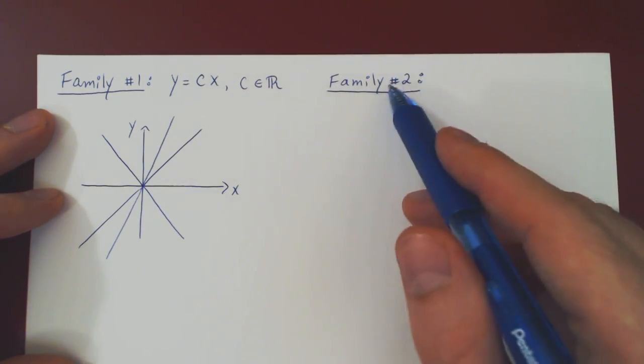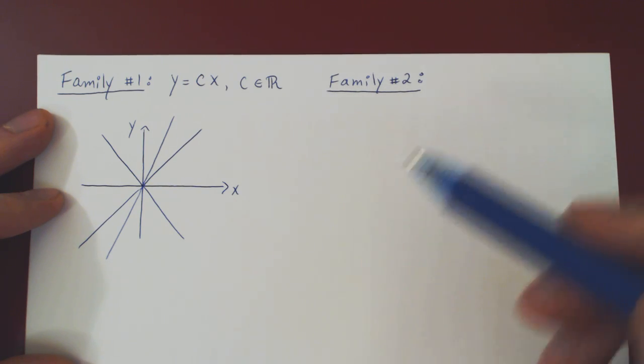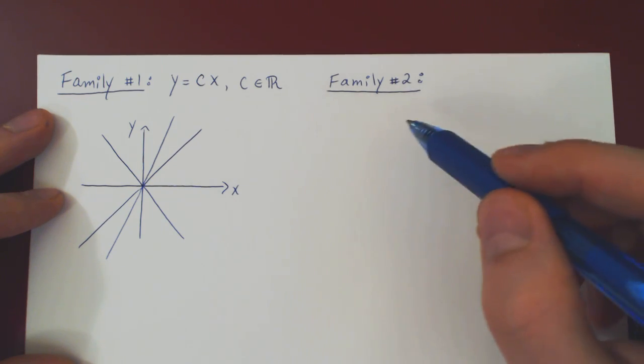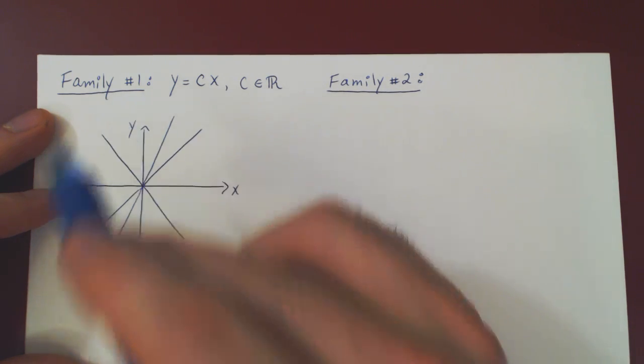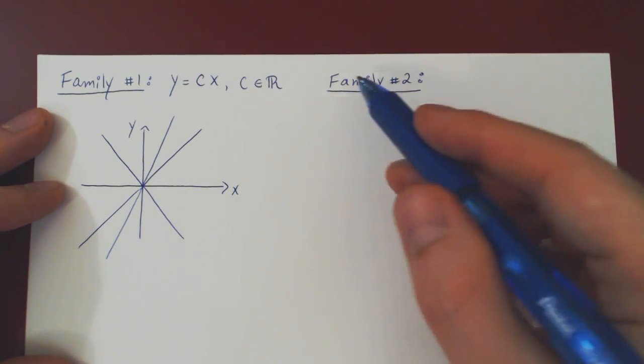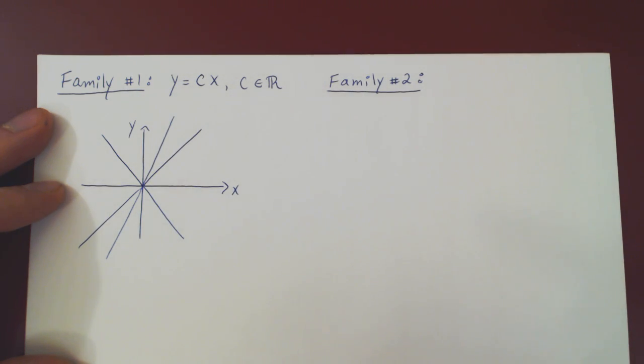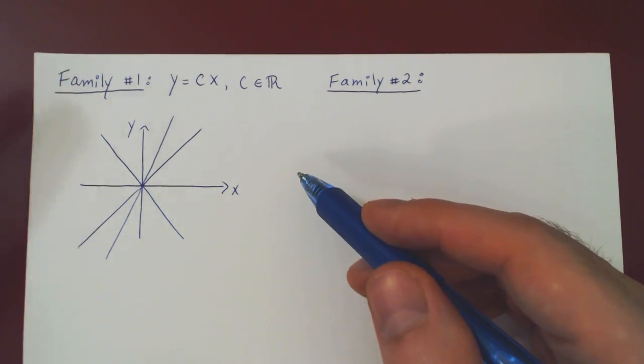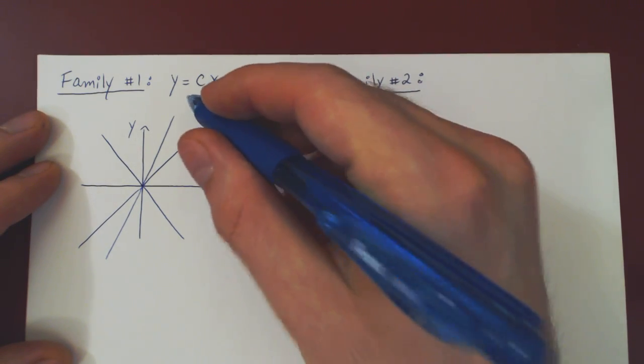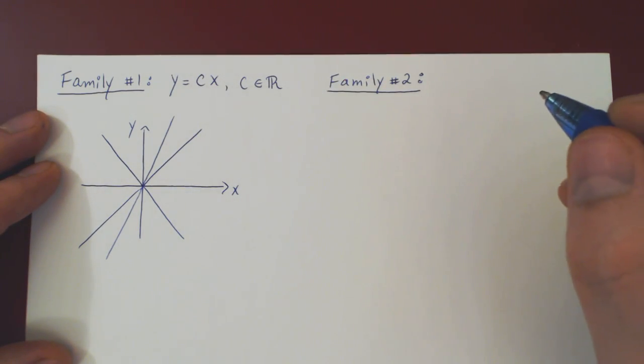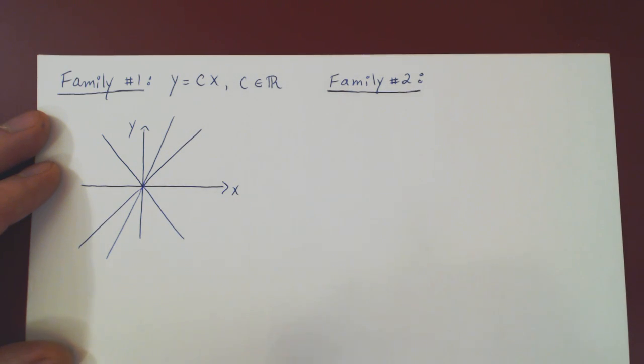Now we want family 2 not to be just any other random family of curves, but we want family number 2 to be the orthogonal family to family number 1. So family 2 will also be an infinite set of curves. And what does it mean when we say that two families of curves are orthogonal to each other? If you take any curve from the first family and any curve from the second family, and you sketch both of these curves in the xy plane, wherever they intersect, they must intersect in a perpendicular fashion.